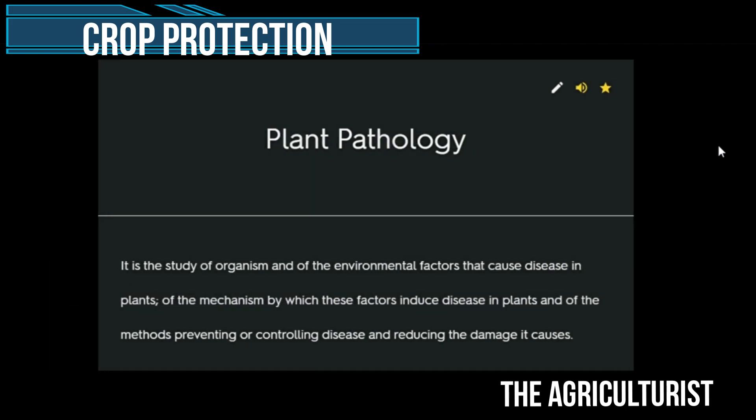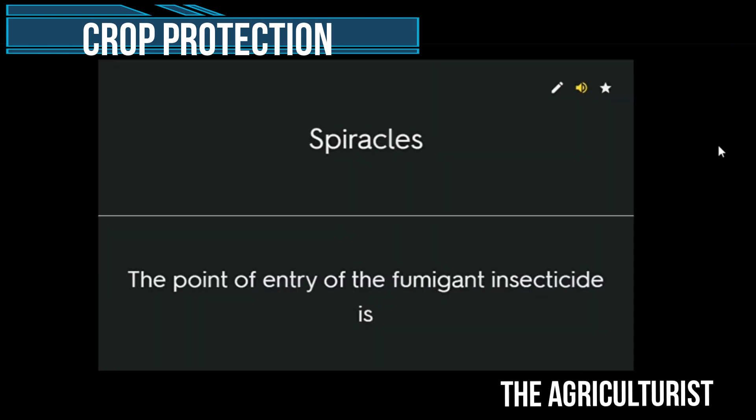Plant pathology: the study of organisms and of the environmental factors that cause disease in plants, of the mechanisms by which these factors induce disease in plants, and of the methods of preventing or controlling disease and reducing the damage it causes. Spiracles — the point of entry of fumigant insecticides.